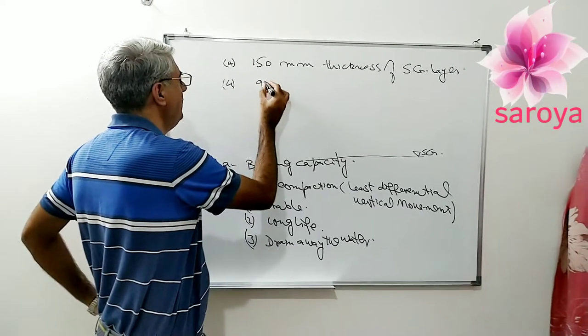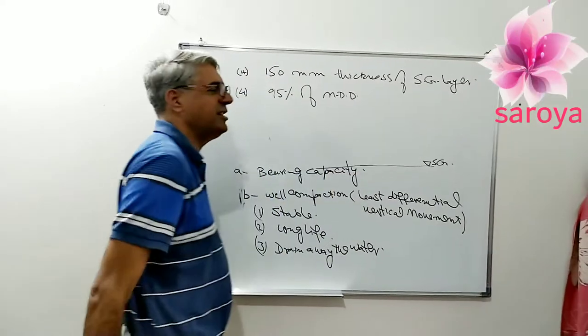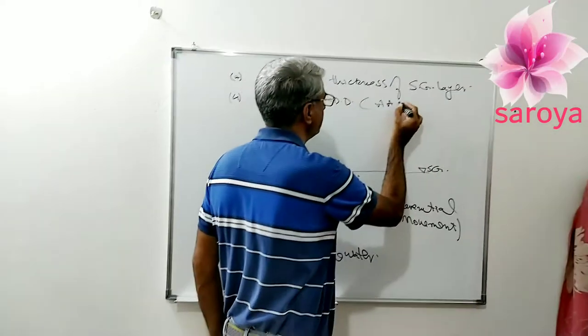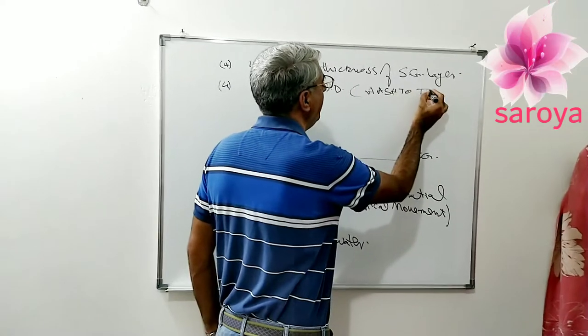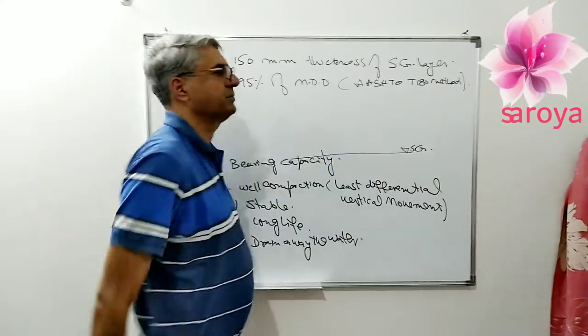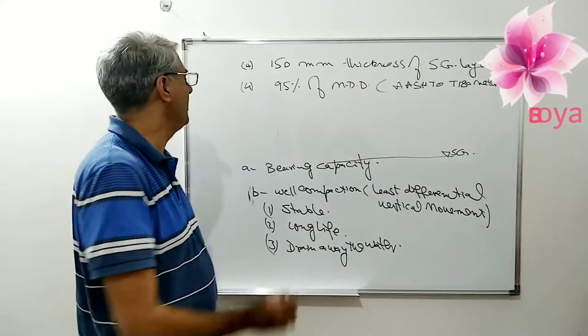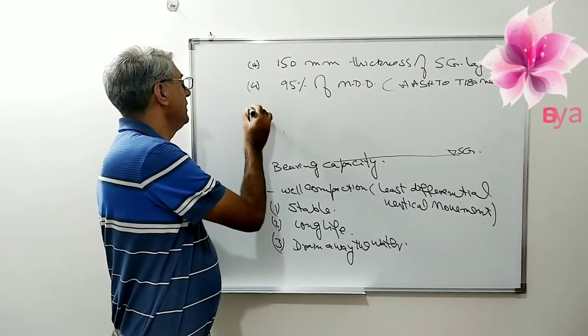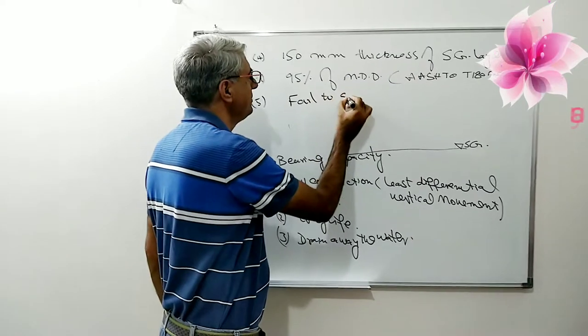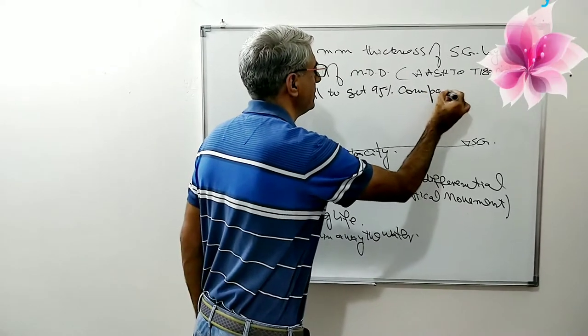Fourth one: it should be compacted to 95% of maximum dry density. Maximum dry density is the characteristic of this material which we have found out by AASHTO D-1-8C method. When we have done this and when we have done this compaction very well, if I fail to get 95% compaction by all means, then the question arises.